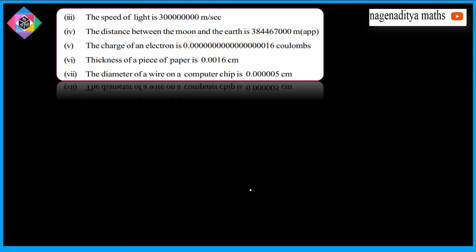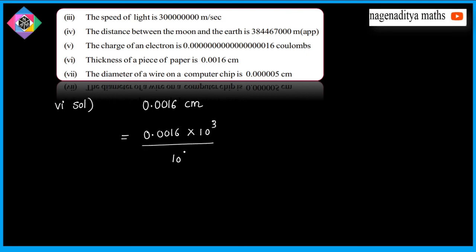The thickness of a piece of paper is 0.0016 centimeters. Solution for sixth one: we move the decimal 3 places. Multiply and divide by 10 to the power of 3. So 10 to the power of 3 multiplied gives 1.6, meaning 1.6 by 10 to the power of 3, which equals 1.6 multiplied by 10 to the power of minus 3 centimeters.